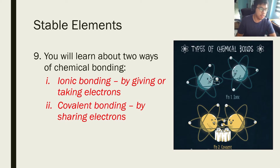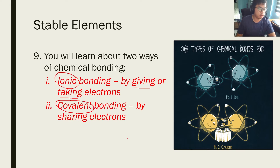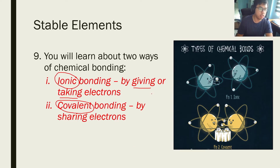So how do these atoms form bonds? There are two ways. The first way is what we call ionic bonding — this is where atoms give or take electrons from another atom in order to join together and form bonds and become a compound. The second way is what we call covalent bonding, and this is when two atoms share electrons with each other in order to become a compound. For this topic, we're only going to look at ionic bonding first.